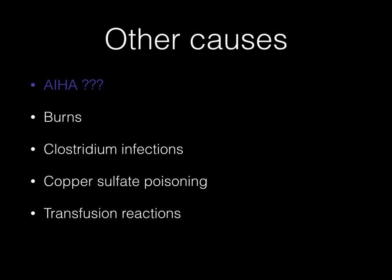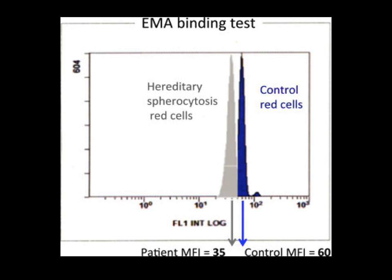So how do you differentiate AIHA versus hereditary spherocytosis? You do a Coombs test, which will be positive in autoimmune hemolytic anemia. The other important test is the EMA binding test, which shows decreased fluorescence intensity in cases of hereditary spherocytosis due to spectrin or band 3 deficiency.